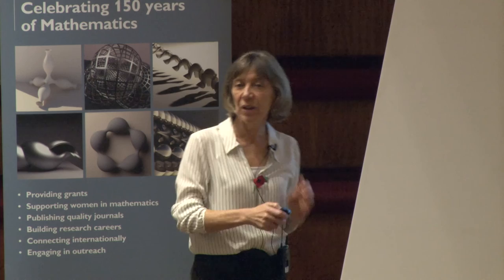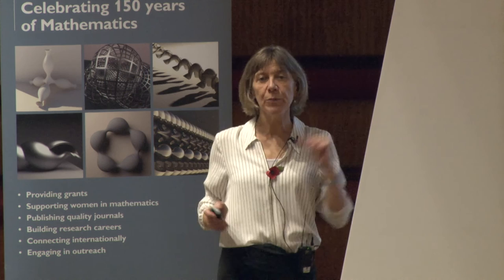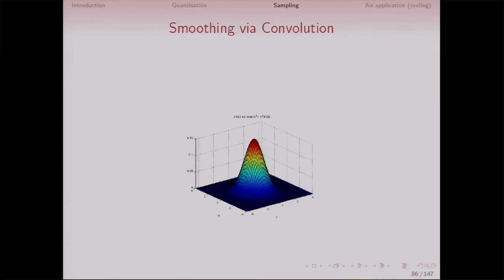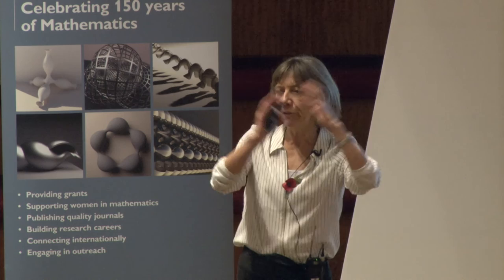To smooth an image I normally take a 2D Gaussian — a normal curve in two dimensions — place the center of that Gaussian on each pixel, multiply and sum, replace that pixel with the result, and slide it across the whole image. This gives what we call a Gaussian blur. This process of convolving with some shape is generally called filtering.